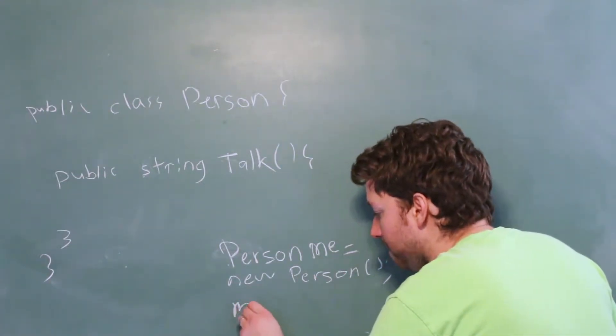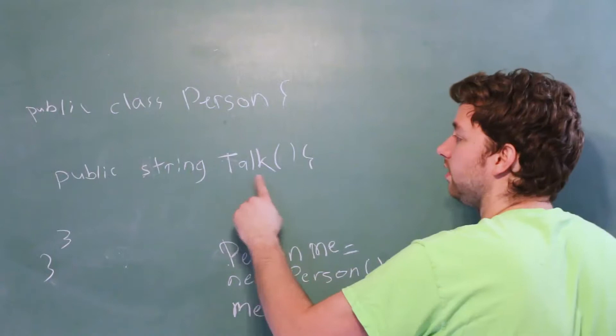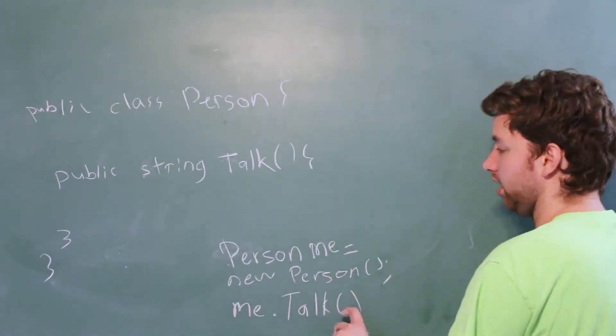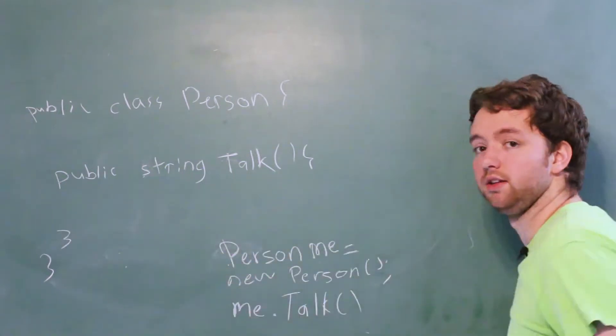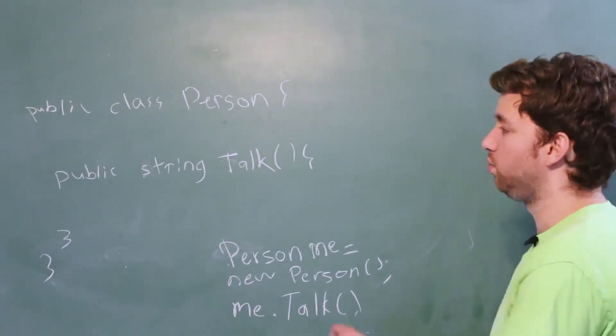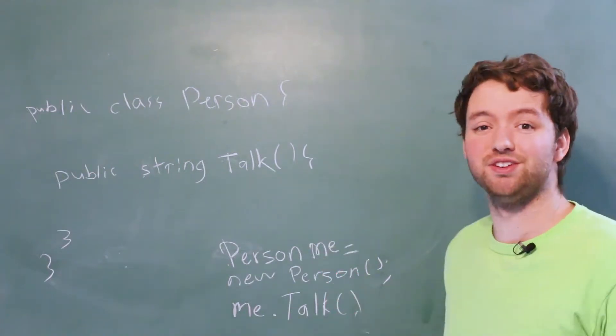So we would say me dot whatever the method is, in this case, talk. And we can do that because it's public. That means we can access it from our object using the dot operator. So what does this method actually do? Right now it does nothing.